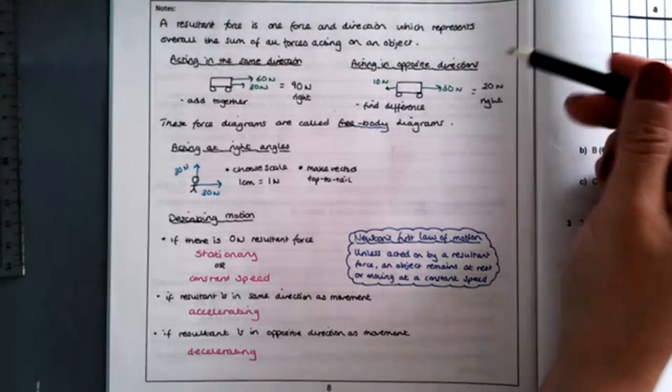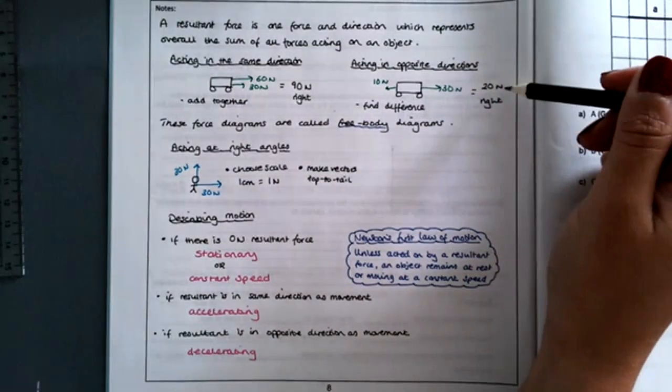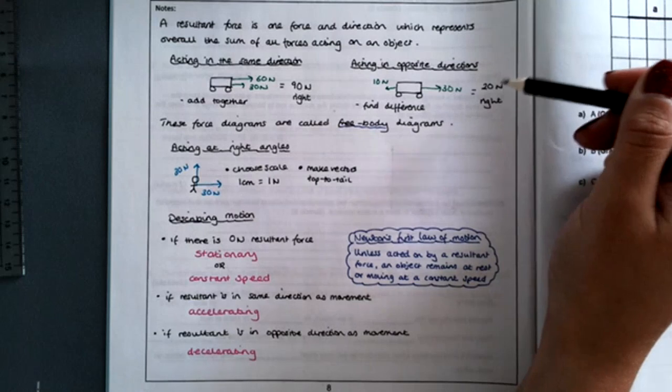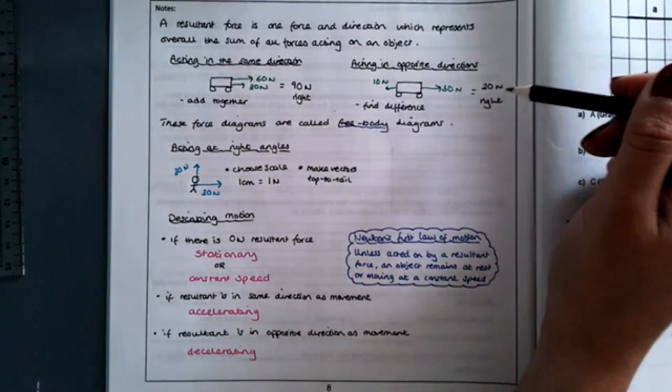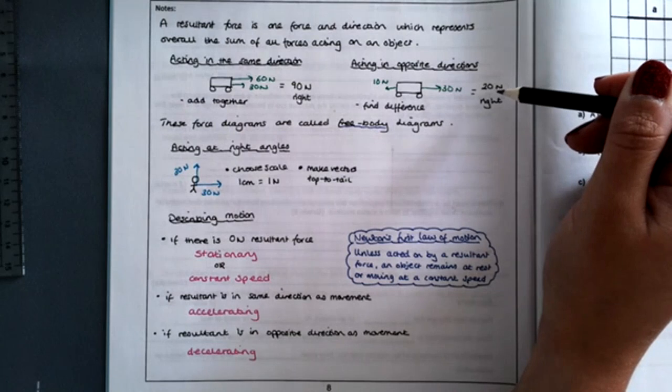If those forces are acting in opposite directions, so 30 to the right and 10 to the left, you get an overall resultant of 20 newtons in the direction of the larger force, which is to the right. You have to find the difference if they're acting in opposite directions.